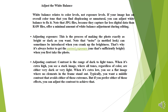Next is adjusting exposure. This is the process of making the photo exactly as bright or dark as you want. Note that a mottled look can sometimes be introduced when you crank up the brightness. That's why it's always better to get the correct exposure — one that is sufficiently bright — when you first take the photo.